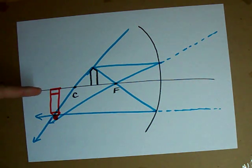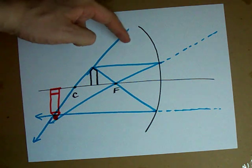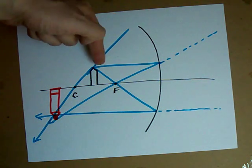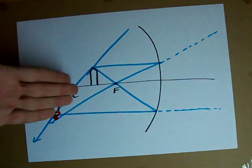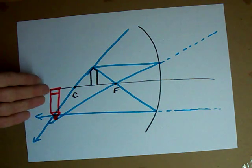Check it out. The image for an object in a concave mirror, when the object is between C and F, the image itself is in front of the mirror, beyond C.